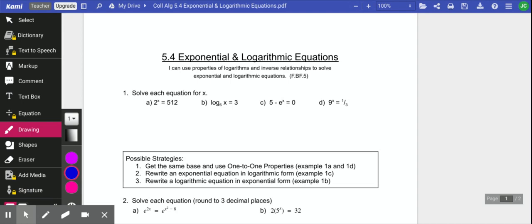We can solve this one using the 1 to 1 property, because this one we have 2 to the x. And if we can write 512 as a power of 2, then we can just solve it using the 1 to 1 property.